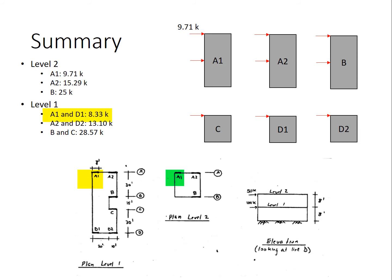So now we just need to go one by one and go from the list on the left onto the walls on the right and find which forces are acting. So let's start on wall A1 at the top, 9.71. At the bottom, 8.33. Wall A2 at the top, 15.29. One level down, 13.10. Wall B at the top we have 25 kips. At the bottom we have 28.57 kips. You'll notice that walls C and D1 and D2 are only single story walls. We look at level 1 for wall C 28.57, D1 8.33, D2 13.10.